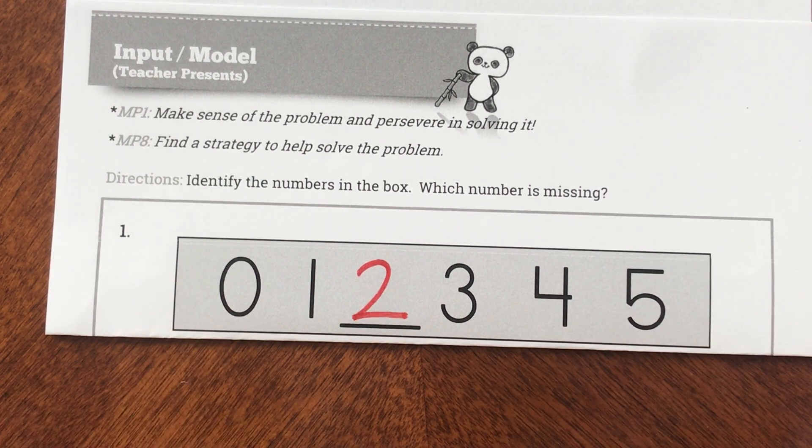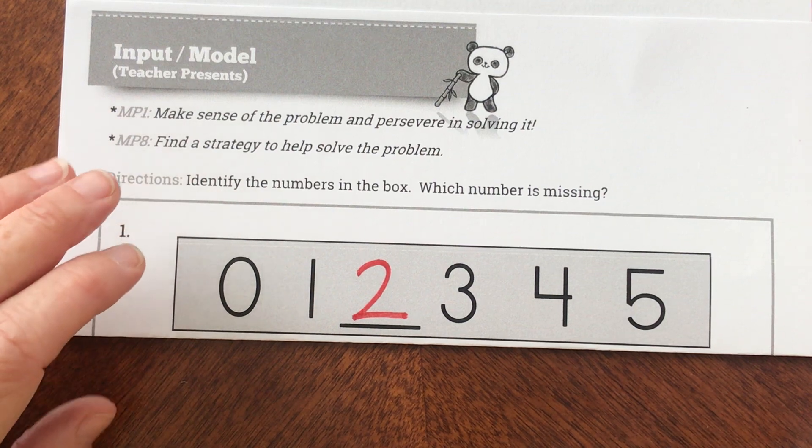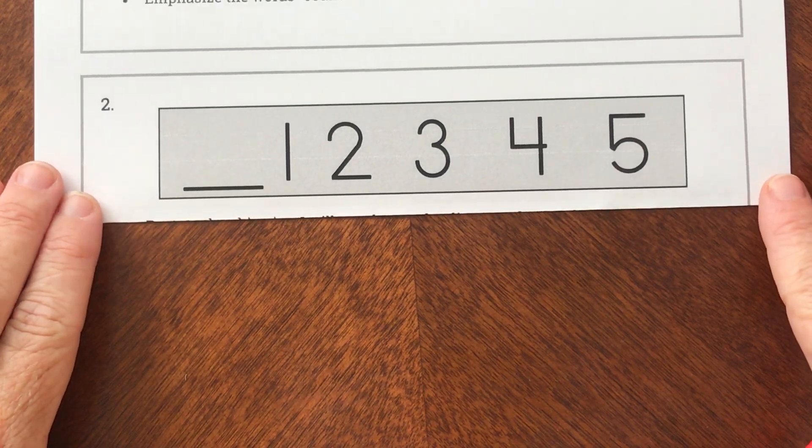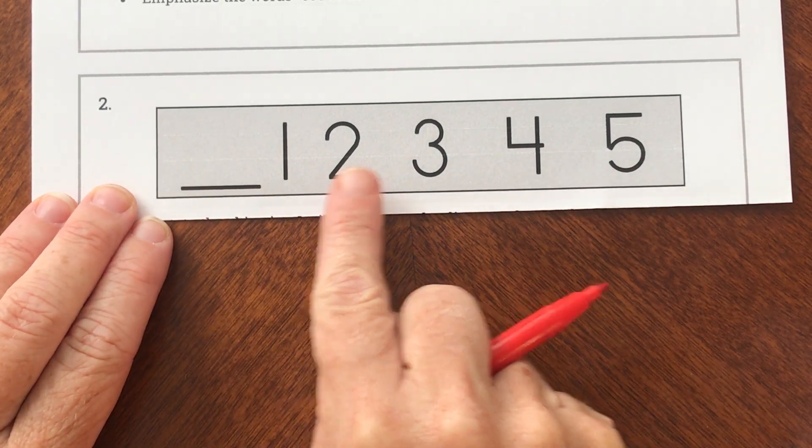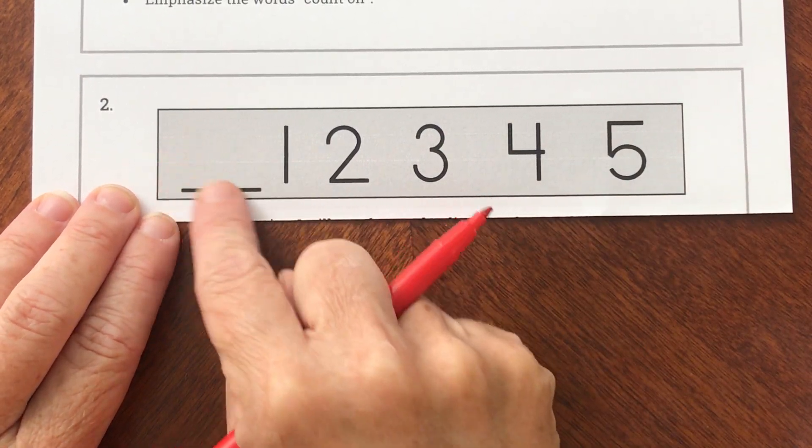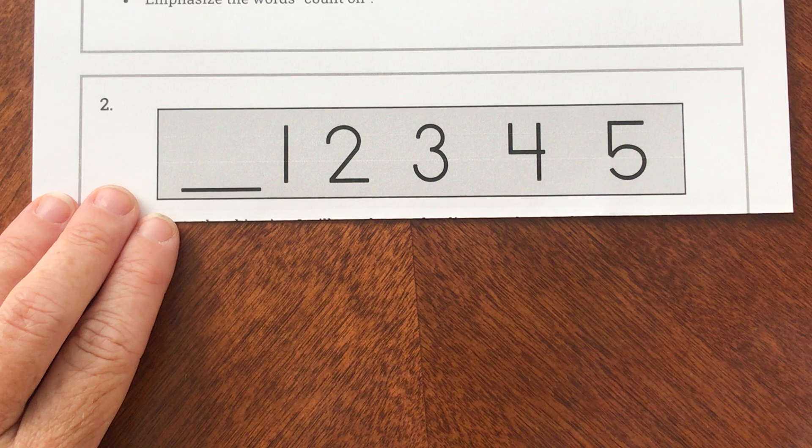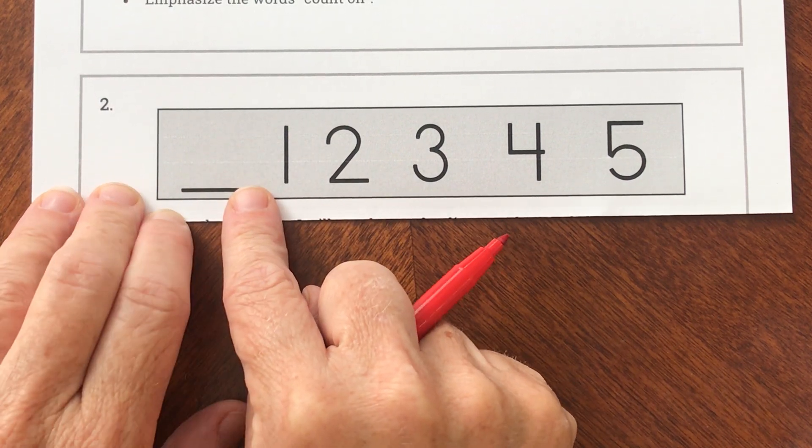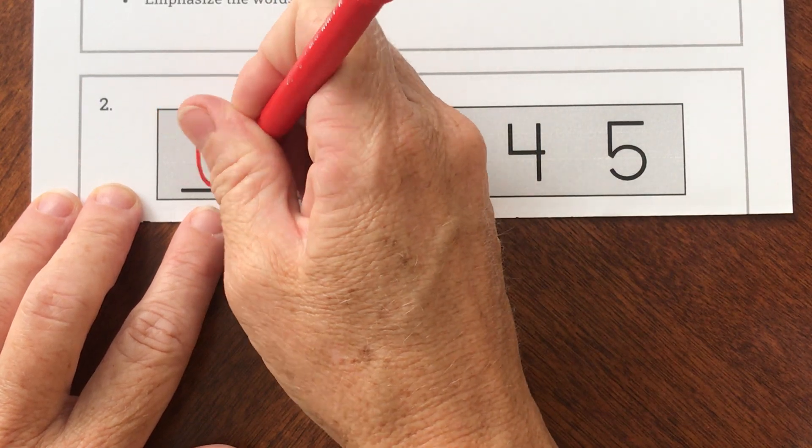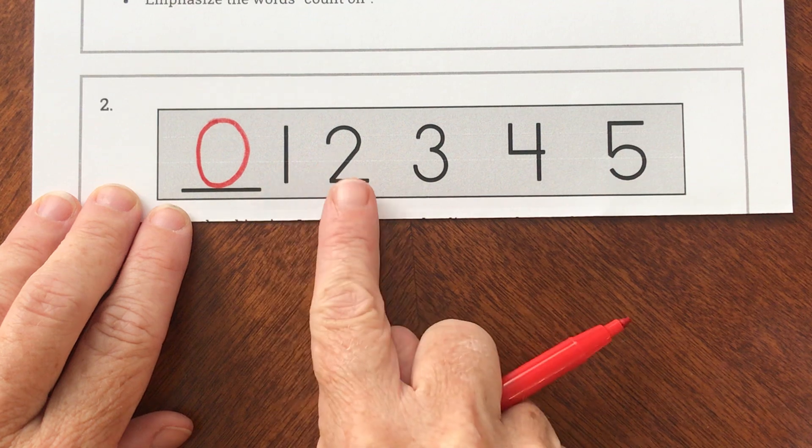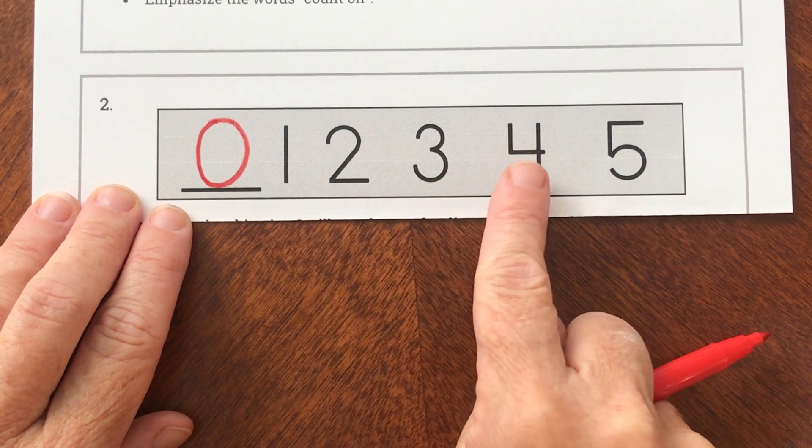I'm going to show you another one. Here is my next one, and it says blank, one, two, three, four, five. What number comes before the one? Before I have one object, how many objects do I have? I know that zero comes before the one, so it's zero, one, two, three, four, and five.